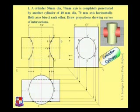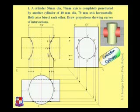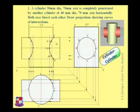So this is the problem which we have solved. One vertical cylinder, another horizontal cylinder — both intersect each other, both axes bisect each other, and in the front view the curve of intersection would be like this. That is the cylinder-cylinder case.